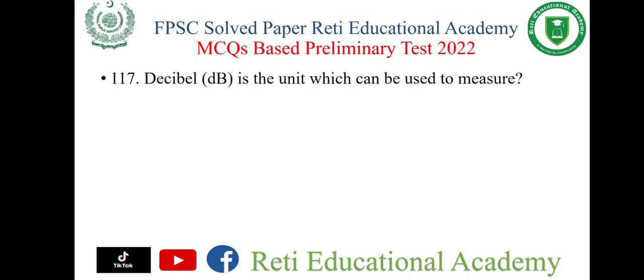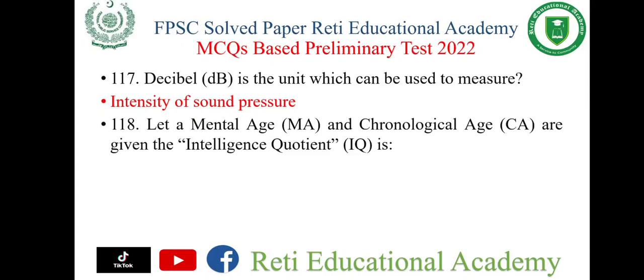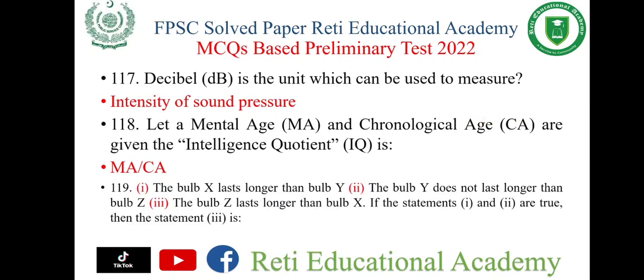Question number 117: Decibel is the unit used to measure intensity of sound pressure. I have uploaded videos regarding all the measurement instruments — you may watch them; the link is given in the i-button. Question number 118: Given mental age (MA) and chronological age (CA), the intelligence quotient IQ is MA divided by CA. Question number 119: Bulb X lasts longer than bulb Y. Bulb Y does not last longer than bulb Z. Bulb Z lasts longer than bulb X. If statements 1 and 2 are true, then statement 3 is uncertain.